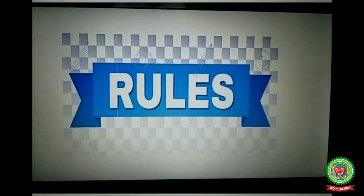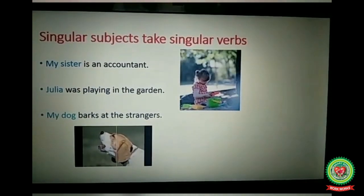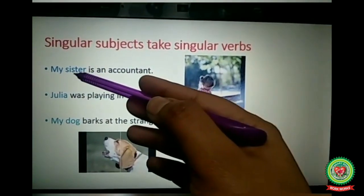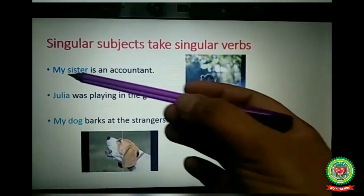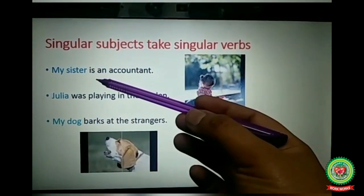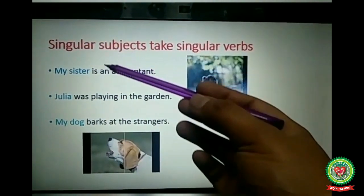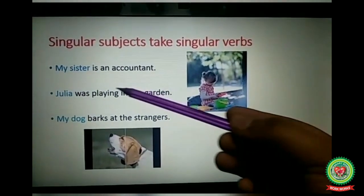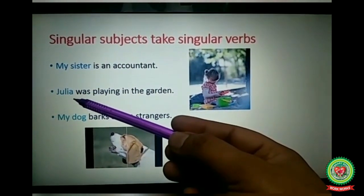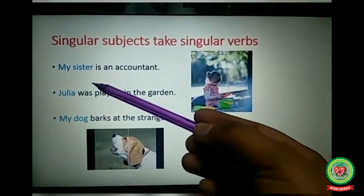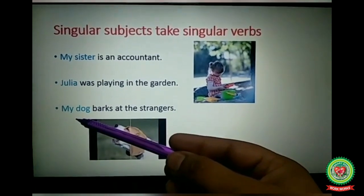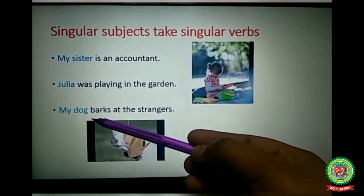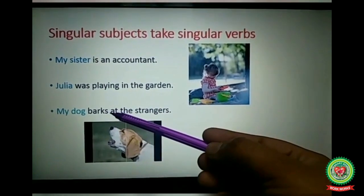Now let's discuss some rules of subject-verb agreement. Rule one: singular subjects take singular verbs. Look at the example — 'My sister is an accountant.' My sister is the subject, and it is a singular subject, so it takes the singular verb 'is.' Next: 'Julia was playing in the garden' — Julia is a singular subject so we take the singular verb 'was.' Next: 'My dog barks at the strangers' — my dog is a singular subject so it takes the singular verb 'barks.'